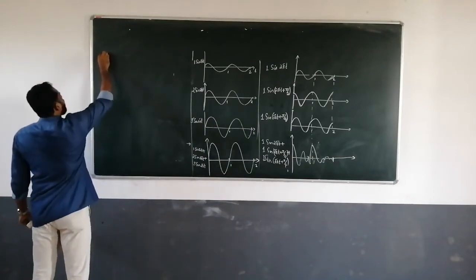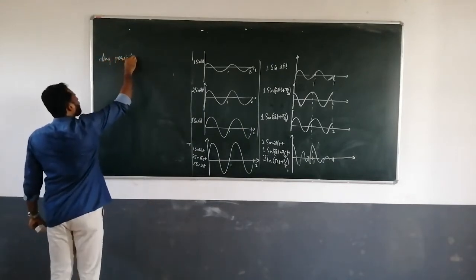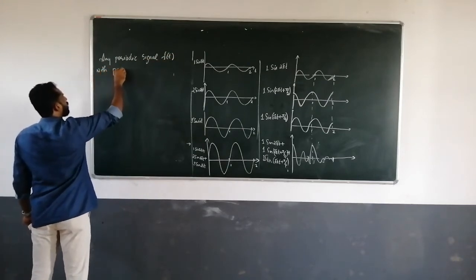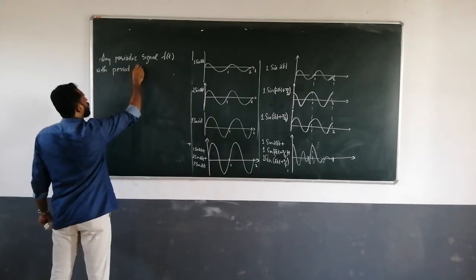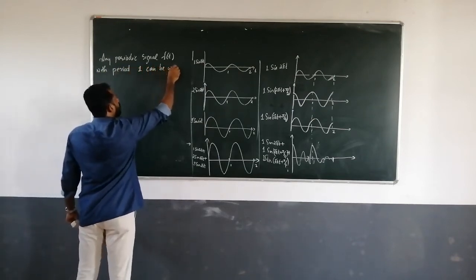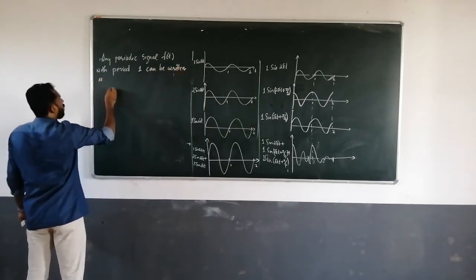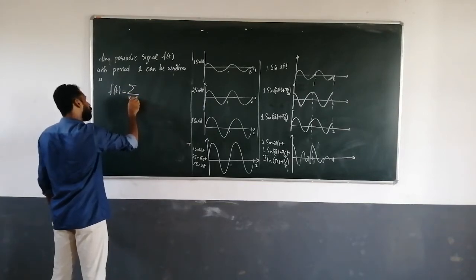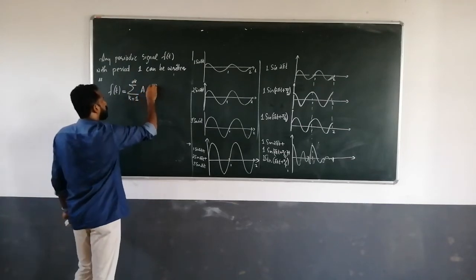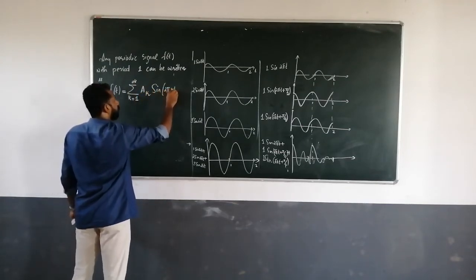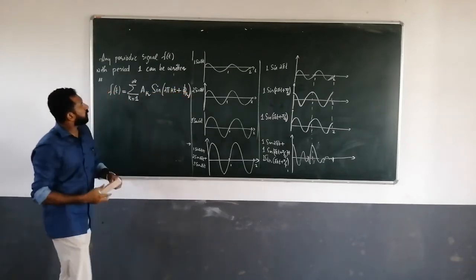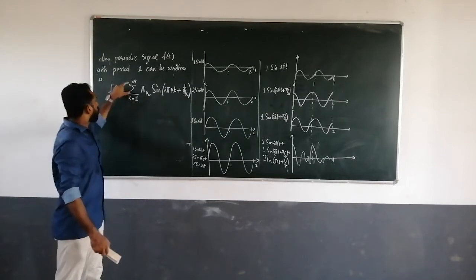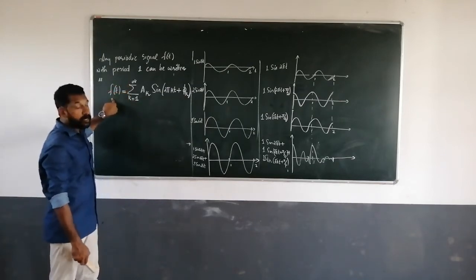In general, any periodic signal f(t) with period T can be written as f(t) = Σ (k=1 to ∞) A_k · sin(2πkt/T + φ_k), where I have modified the frequency, amplitude, as well as the phase. Combining all the waveforms gives a complicated periodic signal of period T.